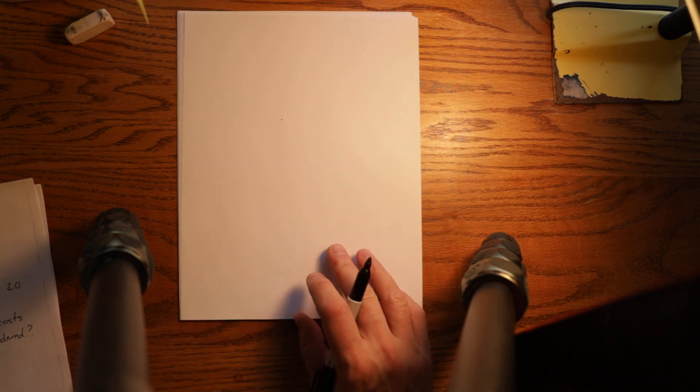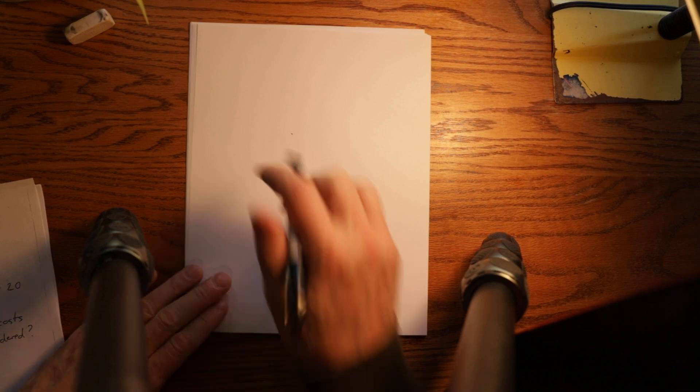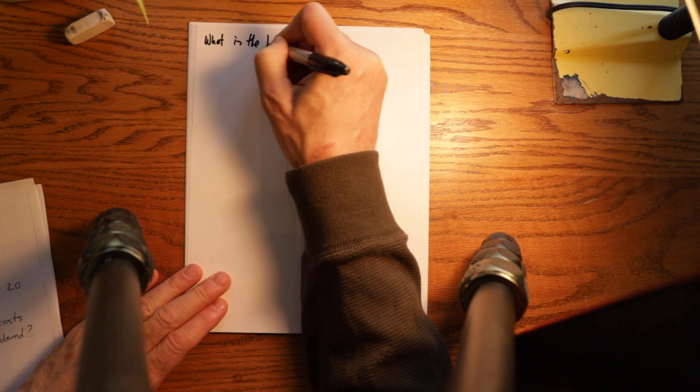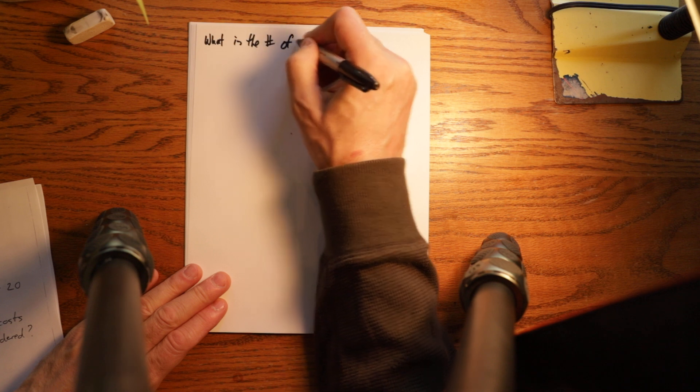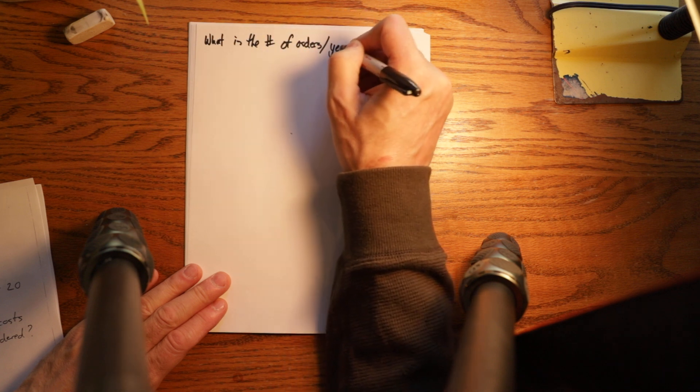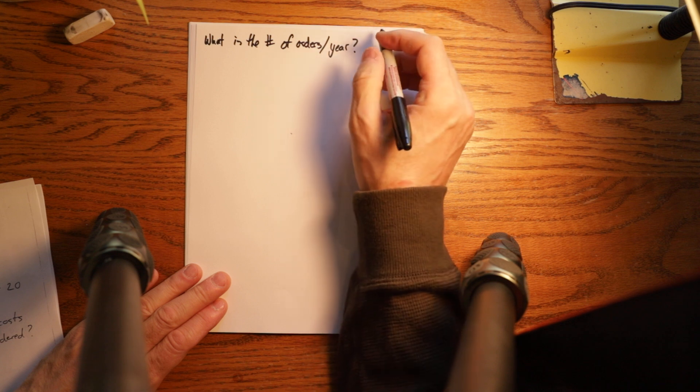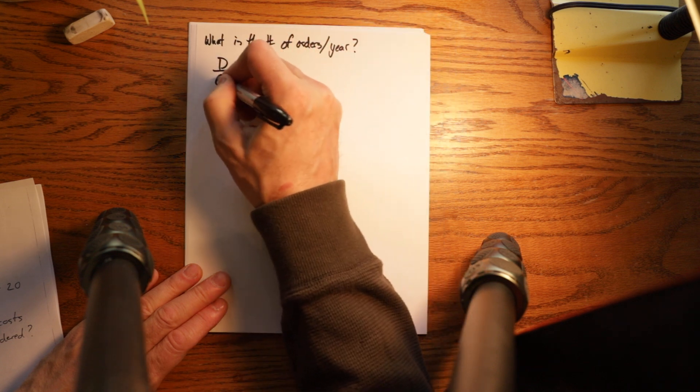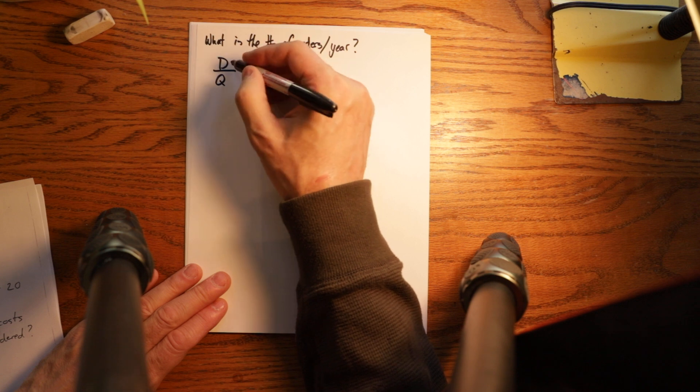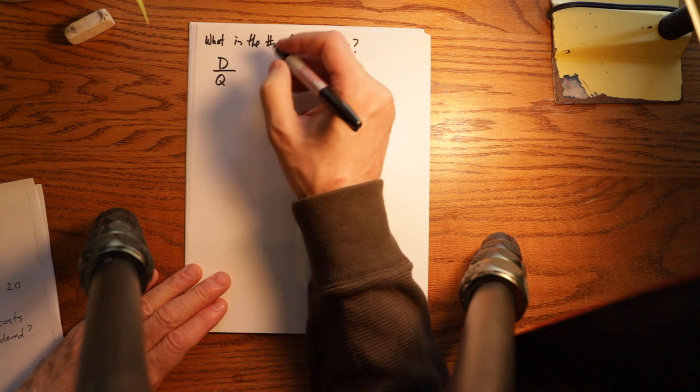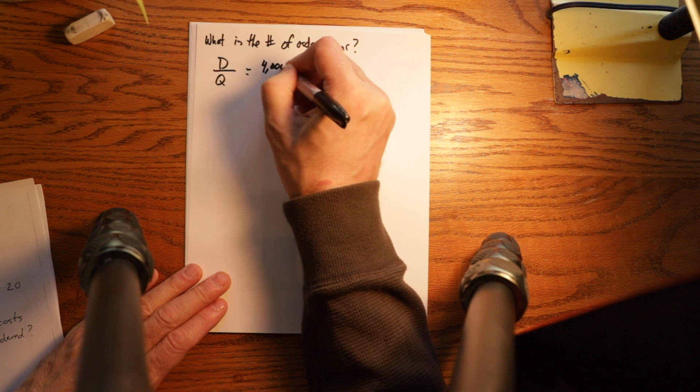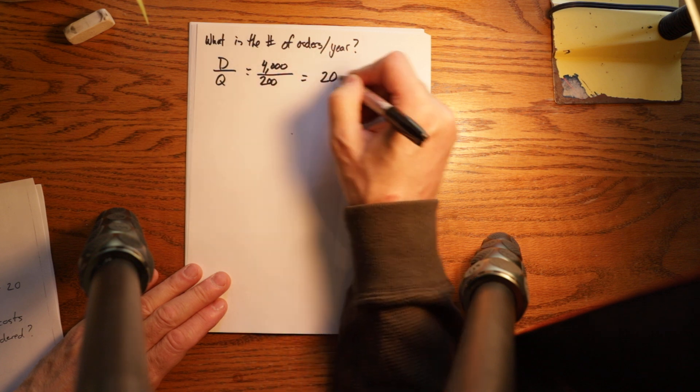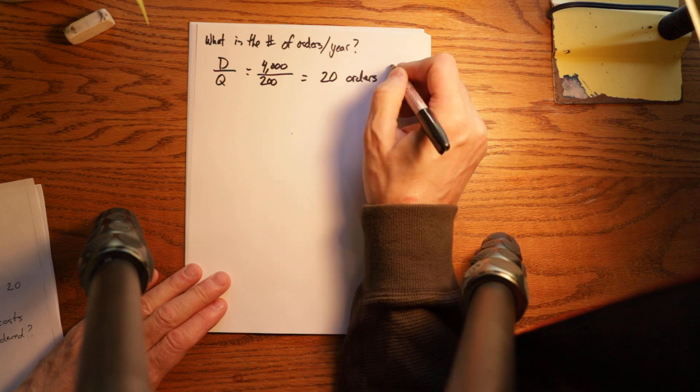Next question is what is the number of orders per year? And that is equal to demand over the quantity you ordered, which is just how much do you need, how much do you order at a time? Equals 4,000 divided by 200, which equals 20 orders per year.